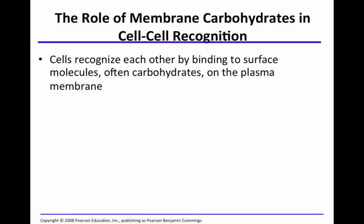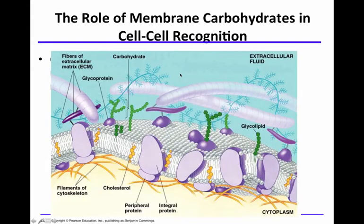Another function of membrane proteins is cell-to-cell recognition. Membrane carbohydrates are involved in cell-to-cell recognition — cells recognize each other by binding to surface molecules, and carbohydrates are often these surface molecules on the plasma membrane. For example, you can see glycoproteins with carbohydrates in green, and glycolipids, in this pictorial diagram of the plasma membrane.